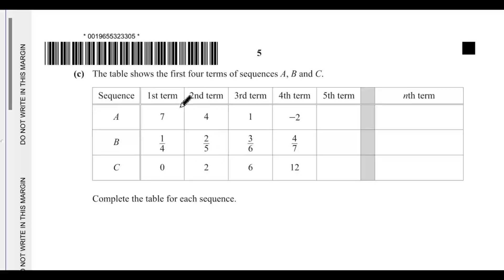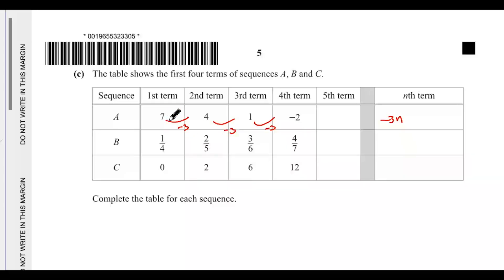Question 2c: the table shows the first four terms of sequences A, B, and C — complete the table for each sequence. For sequence A, the common difference is 4 minus 7 equals negative 3, then 1 minus 4 equals negative 3, and minus 2 minus 1 equals negative 3. So we start with nth term equals minus 3n, but when n equals 1 that gives minus 3, and we need 7, so we need minus 3 plus 10.